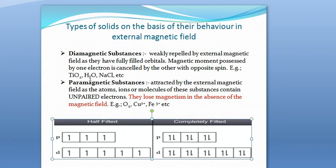The second type is paramagnetic substances. These substances are attracted by the external magnetic field — they experience a force of attraction in the presence of an external magnetic field. The reason is that they have unpaired electrons. These can be atoms, ions, or molecules depending on the nature of the solid.